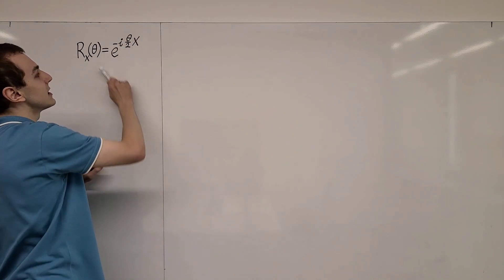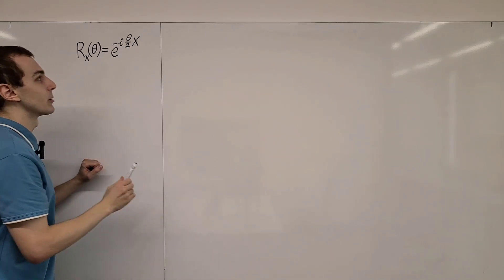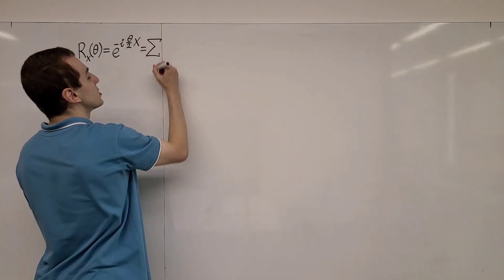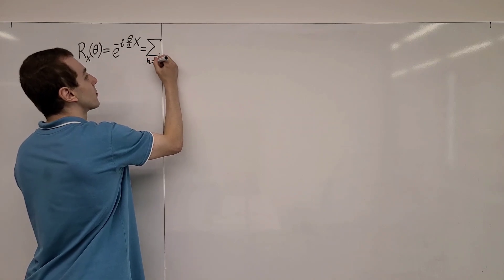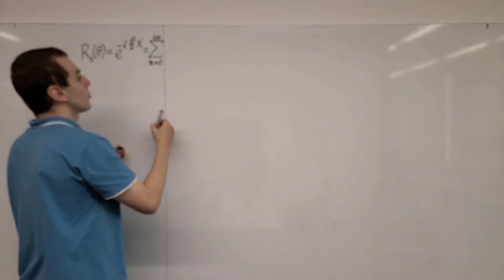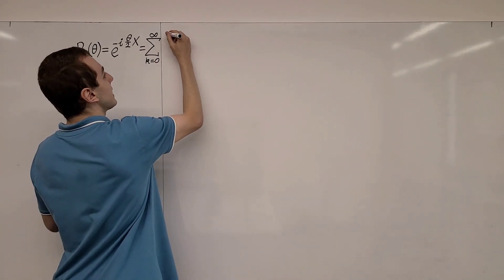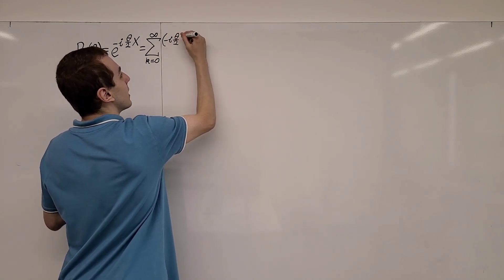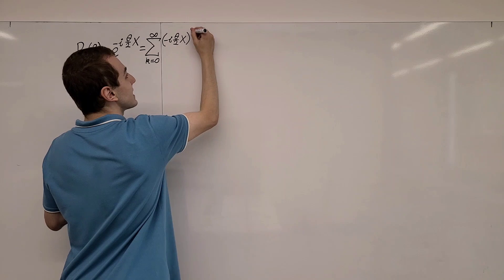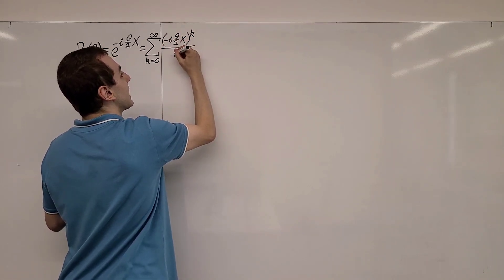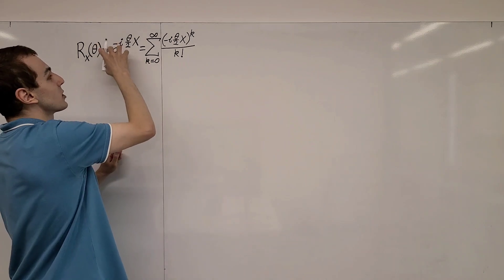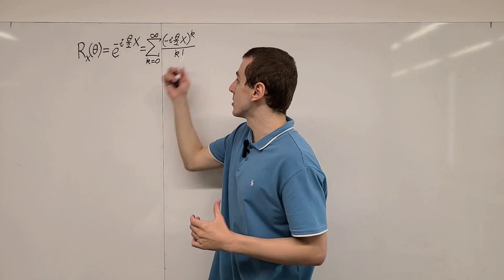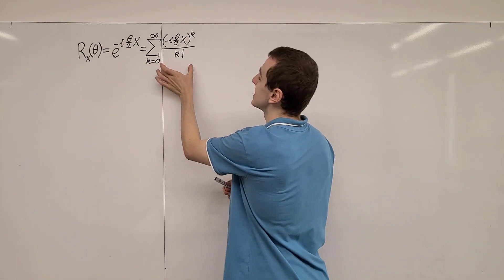What I'm going to do is define this in terms of its Taylor series — that is an infinite sum. We're going to have a sum that goes from k equals 0 to infinity. The terms in this infinite series: we're going to take what is in the exponent, which is minus i theta on 2, and we have Pauli X; we're raising that to the power of k and dividing by k factorial. This is the exponential function by definition. So anytime you want to take the exponential of a matrix or an operator, you can define it using this Taylor series.